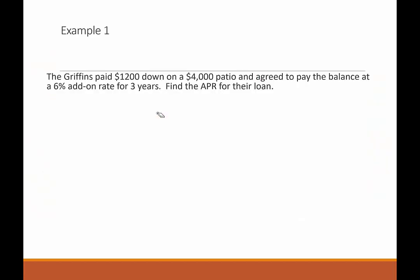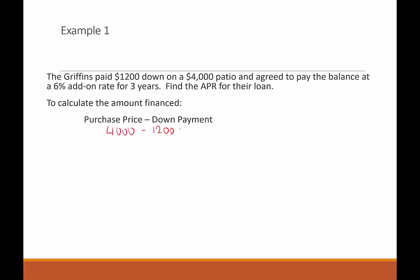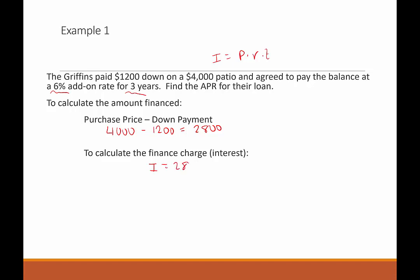Let's start with the Griffins. The Griffins paid $1,200 down on a $4,000 patio and agreed to pay the balance at a 6% add-on rate for three years. Let's find the APR for their loan. First, we calculate the amount financed: $4,000 purchase price minus the $1,200 down payment equals $2,800 financed. Next, we calculate the finance charge using simple interest — P times R times T — so $2,800 times 0.06 times 3 years equals $504 in interest.